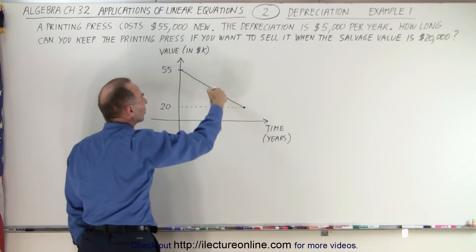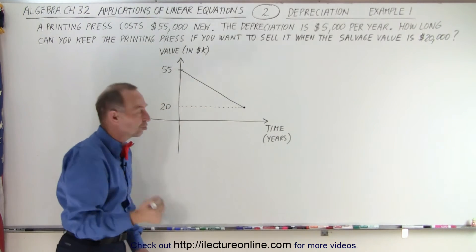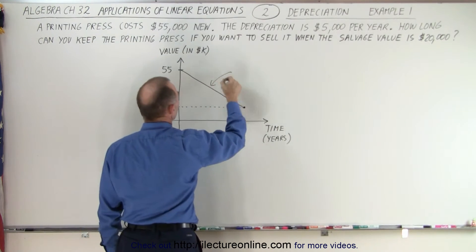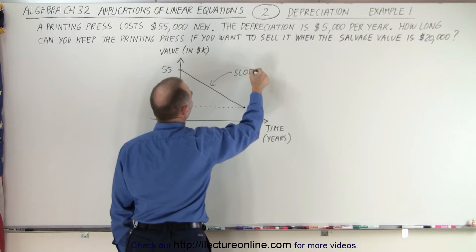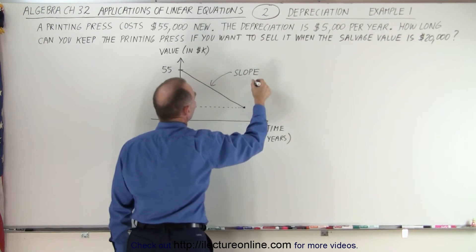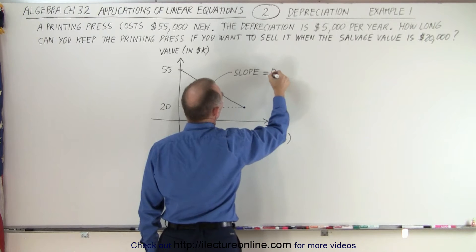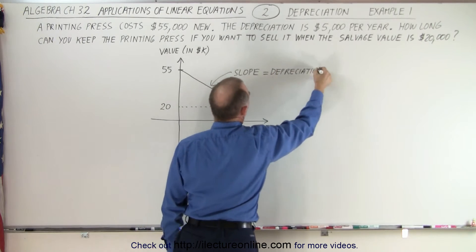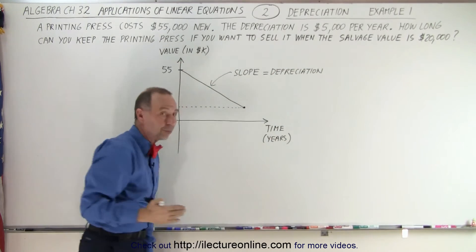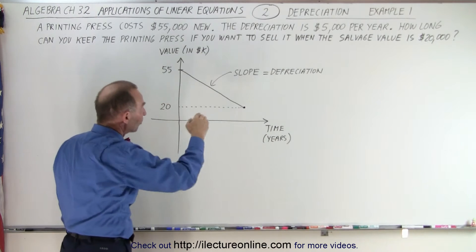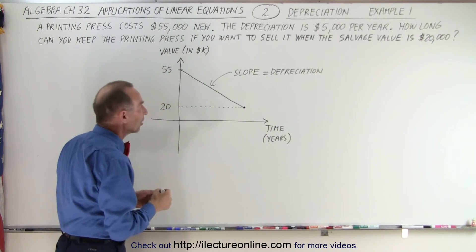And the slope here. The slope is what we call the depreciation. So the slope indicates how fast it depreciates. Slope is the same as the depreciation. The steeper the slope, the faster it depreciates. The less steep the slope, the less fast it depreciates.